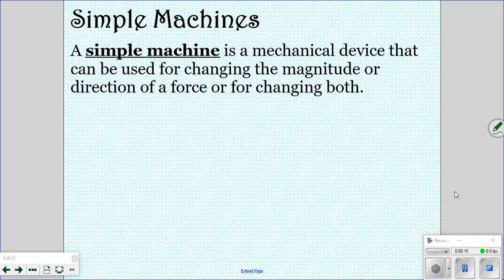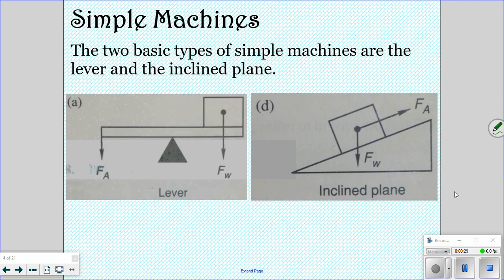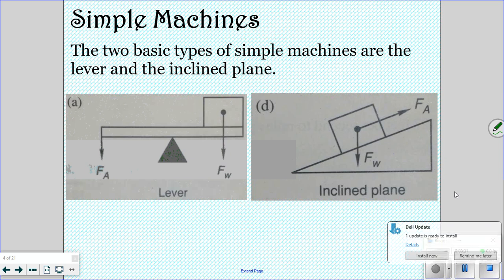A simple machine is a mechanical device that can be used for changing the magnitude or the direction of a force, or for changing both. You've probably used some simple machines in your life. The two most basic types are the lever and the incline plane.